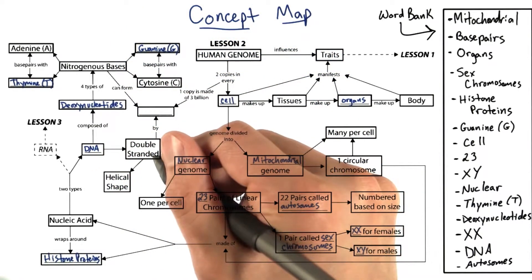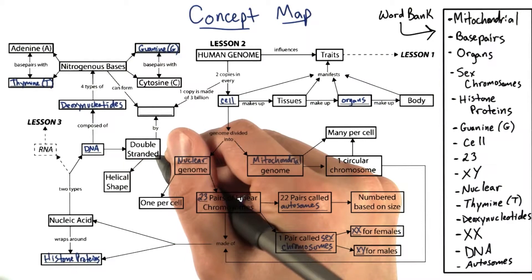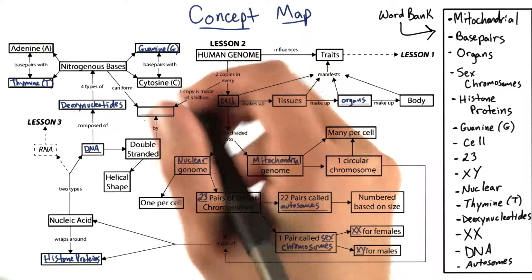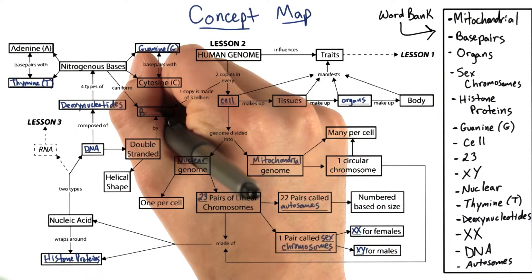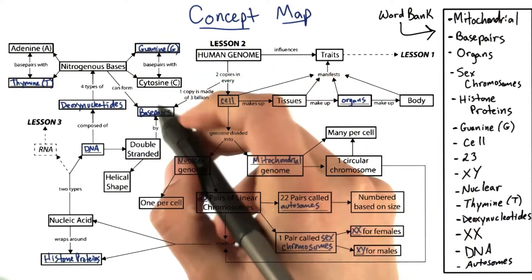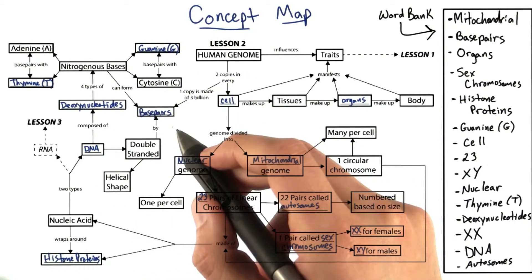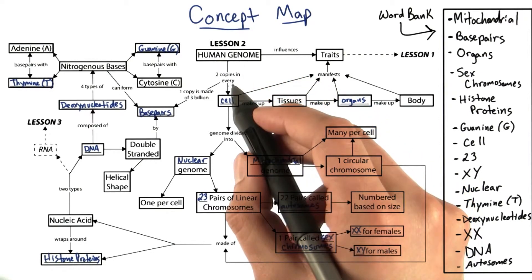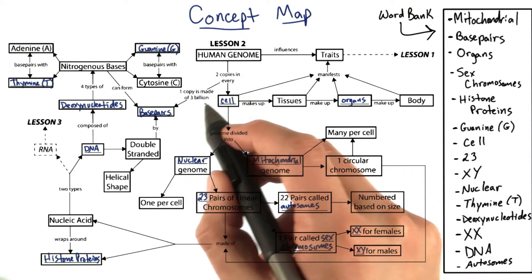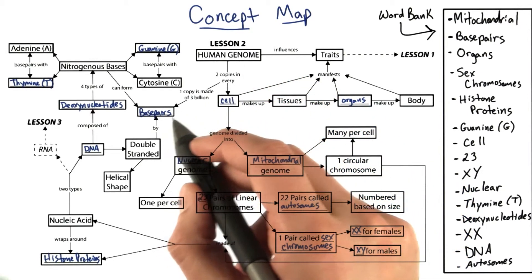Now DNA is double-stranded and comes in a helical shape. But the double-stranded nature of DNA is held together by base pairs, which are formed by the nitrogenous bases. And one human genome, one copy, is made of three billion base pairs of DNA.